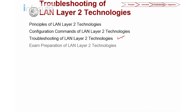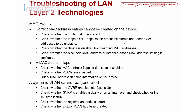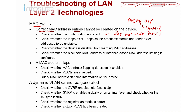Now let's look into troubleshooting Layer 2 technology. First, we look into MAC faults. If you have a faulty MAC address entry, you need to correct it. Check whether the configuration is correct using display MAC address. Also check your proxy ARP — make sure you use the right commands. Check whether a loop exists, as a loop causes a broadcast storm and makes MAC addresses unstable, especially when STP is disabled.